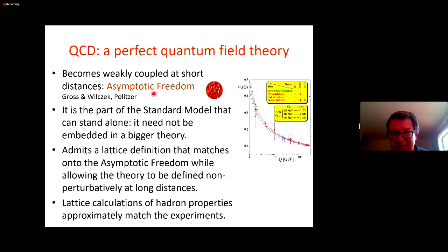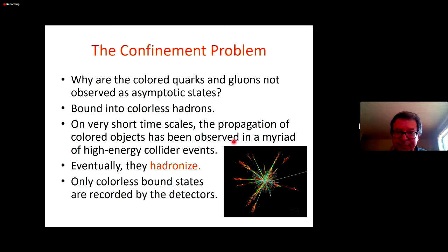By the way, feel free to interrupt. It would be good to keep it informal. Okay, so this growth of the coupling led to the famous confinement problem, which is why don't we see colored particles as asymptotic states? And in particular, these colored gluons that are massless don't propagate freely. If they could propagate freely, then we would see these unbound massless particles, but instead we don't see them in the spectrum of quantum chromodynamics. And they always appear to be bound into colorless hadrons. So on very short timescales, we do see propagation of colored objects. In particular, with heavy quarks, you see it unmistakably. You see these so-called B jets that propagate quite far, but then they always effectively bind into these colored singlet objects. And this is an example of a diagram with a bunch of jets that hadronize into streams of hadrons. So in the end, you see only colorless bound states recorded by the detectors.